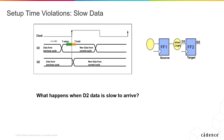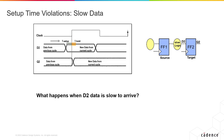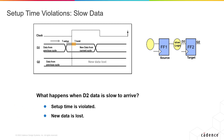What happens when D2 is slow to arrive? If the data from the FF1 flop takes too long to get to FF2, then by the time FF2 is ready to store the data from the previous cycle, the data starts changing into the new data from the current cycle. Because the new data possibly conflicts with the not fully stored old data, it creates a race condition, and therefore the stored output of the capture flop is unknown. Therefore, when your data is slow to arrive and the setup time is violated, the new data is considered lost or unknown.